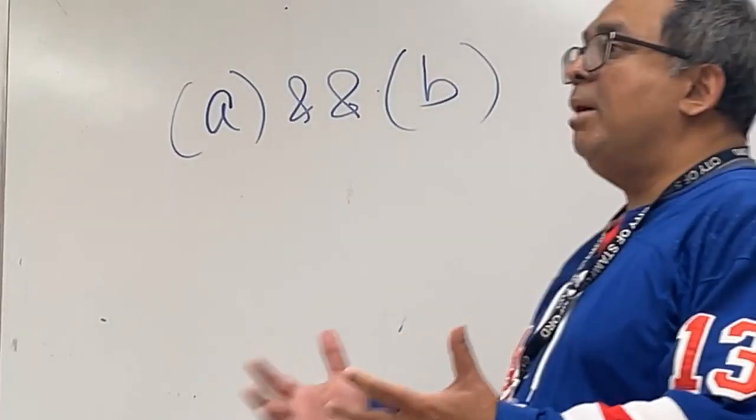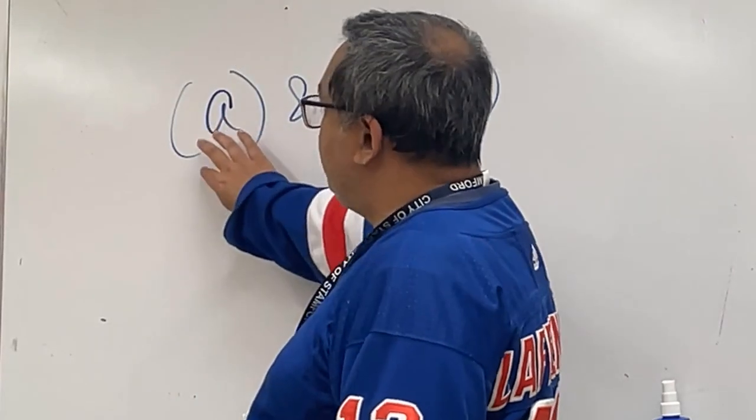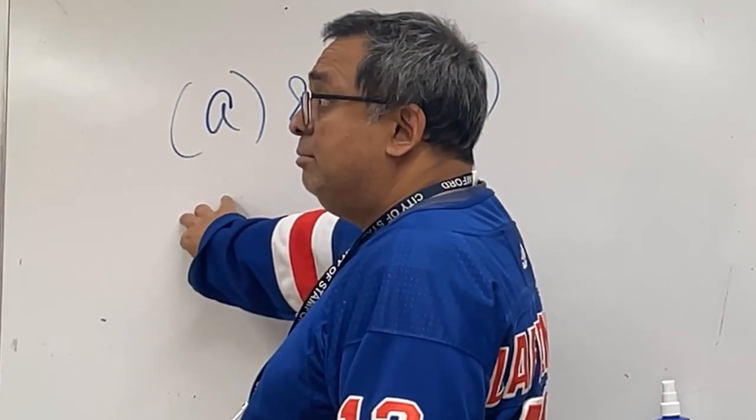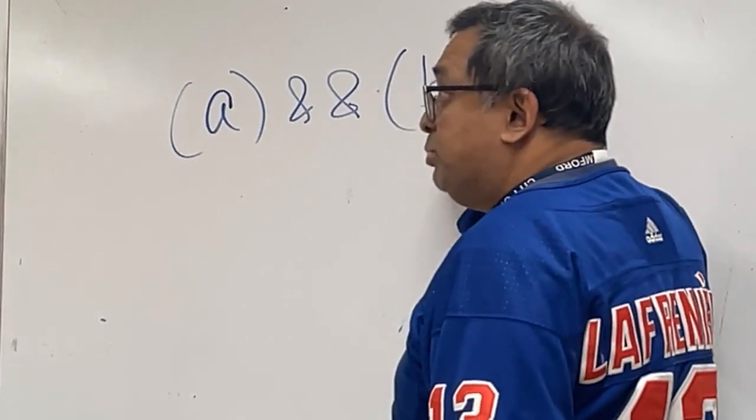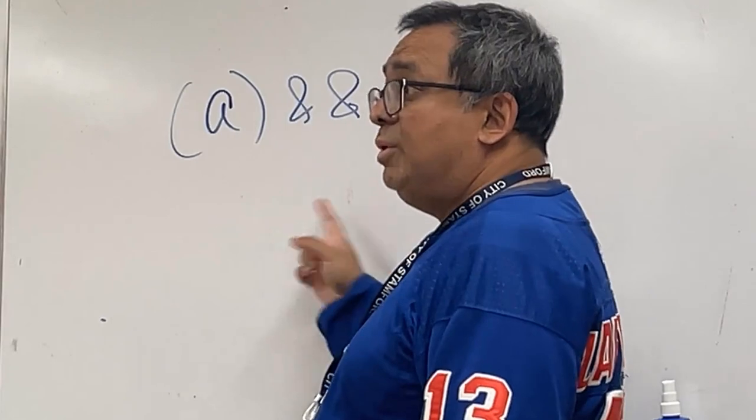So here is how some programming languages work. They take this expression and they evaluate it, then they take the B expression and they evaluate it, and then they do the AND operation to see if they're both true.